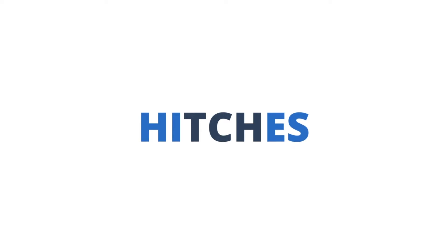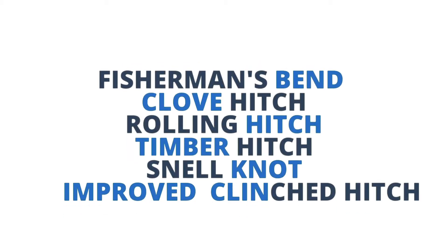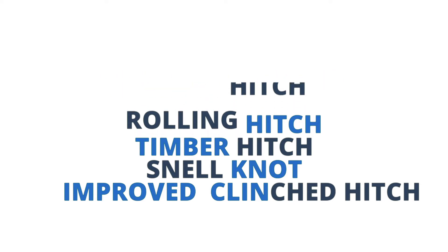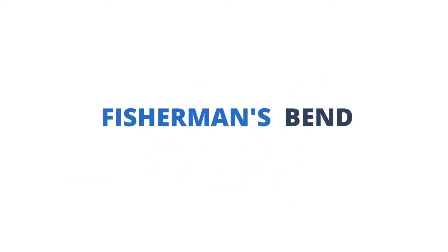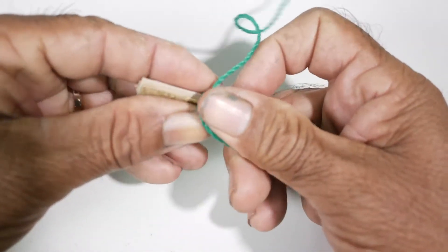Lastly, our hitches. Hitches are used to secure a rope to a post or a hook. The fisherman's bend, clove hitch, rolling hitch, timber hitch, snell knot, and improved clinch knot are hitches included in this video. The fisherman's bend is the most stable hitch used in mooring boats. It is also easy to perform.